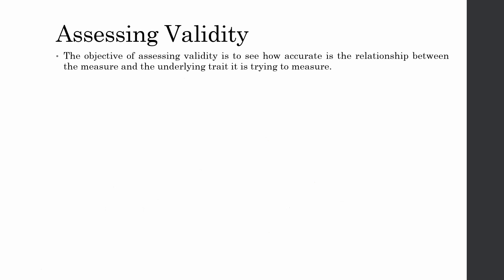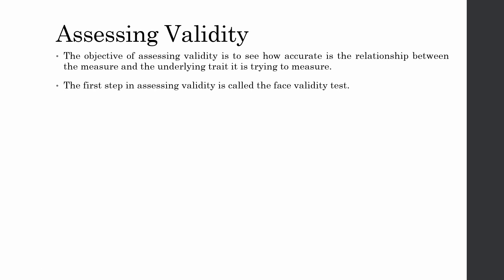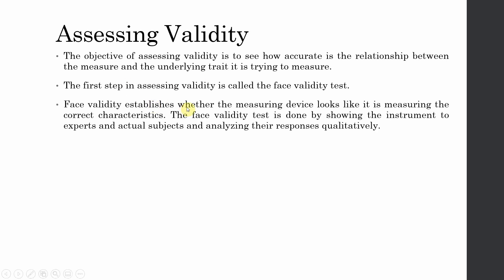The objective of assessing validity is to see how accurate the relationship is between the measure and the underlying trait it is trying to measure. For example, if we want to measure job satisfaction, the underlying trait is job satisfaction, and the measures are individual questions on salary, environment, co-workers, and job security. The first step in assessing validity is called the face validity test. Face validity establishes whether the measuring device actually looks like it is measuring the correct characteristics.